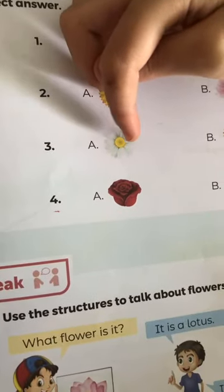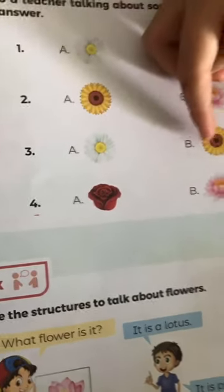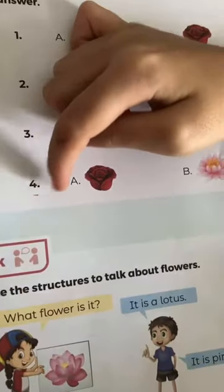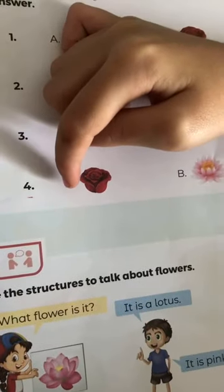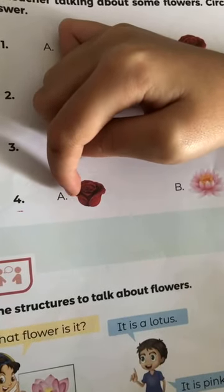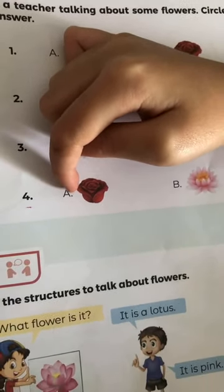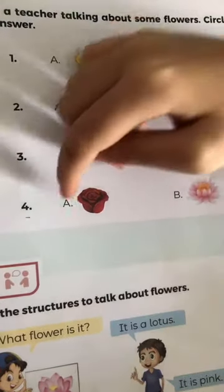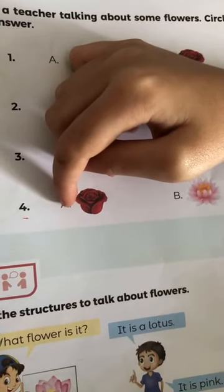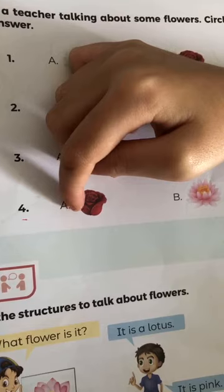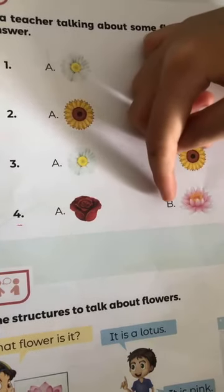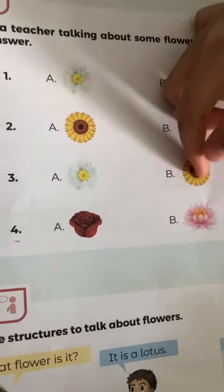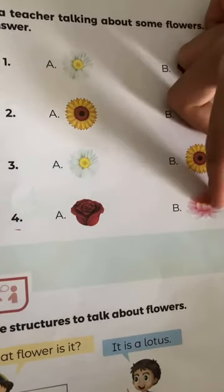3A: daisy. B: sunflower. 4A: rose. B: lotus.